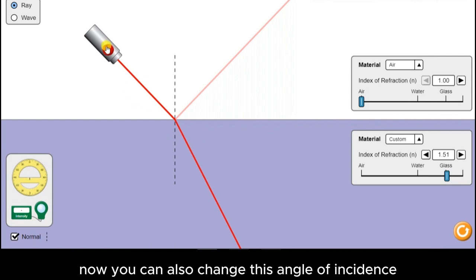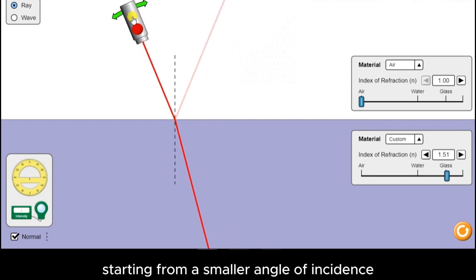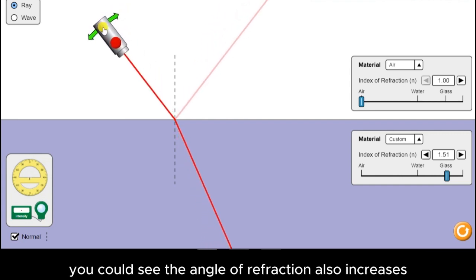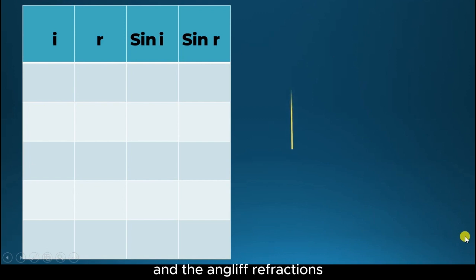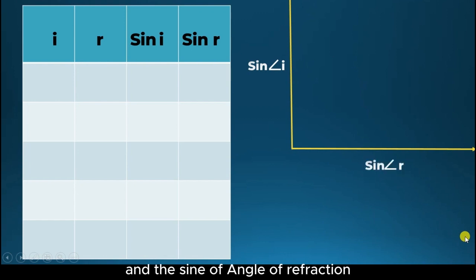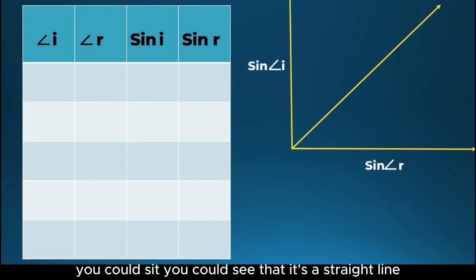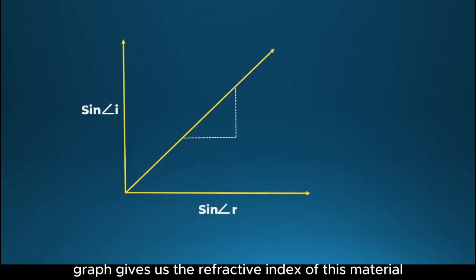We can also change this angle of incidence and see what happens to the angle of refraction, starting from a smaller angle of incidence. As the angle of incidence increases, you could see the angle of refraction also increases. So you could take a few values for the angle of incidences and the angles of refraction, and then take the sine of angle of incidence and the sine of angle of refraction. If you draw a graph of sine of angle of incidence versus sine of angle of refraction, you could see that it's a straight line. The slope of this graph gives us the refractive index of this material.